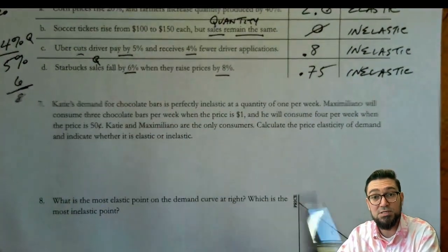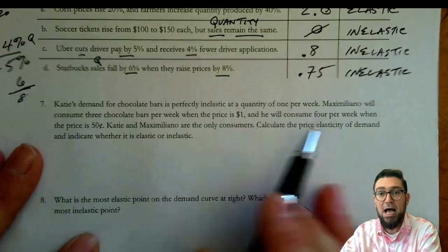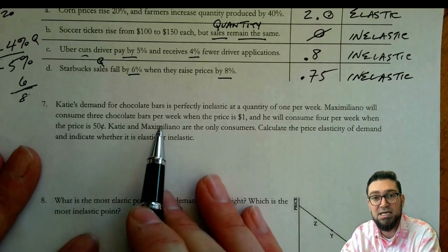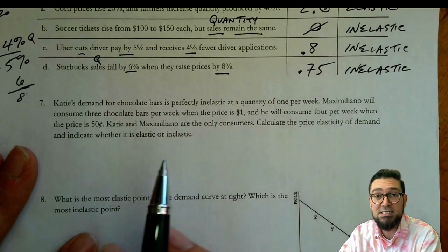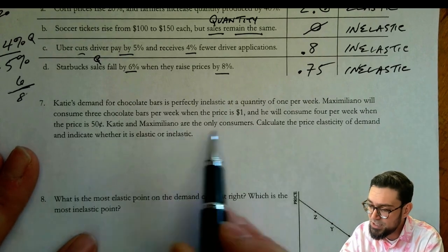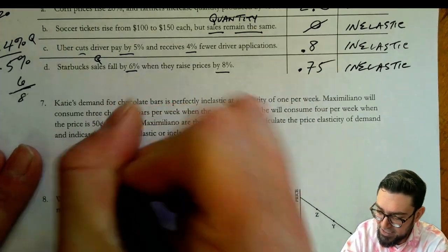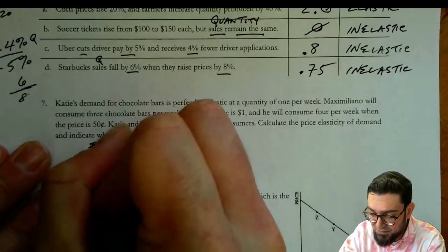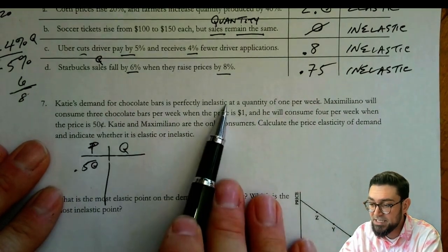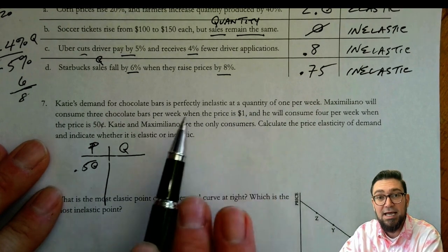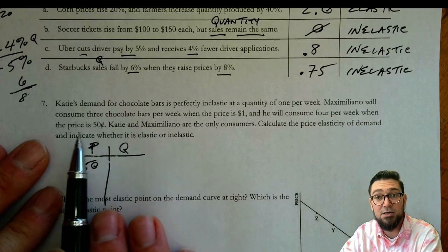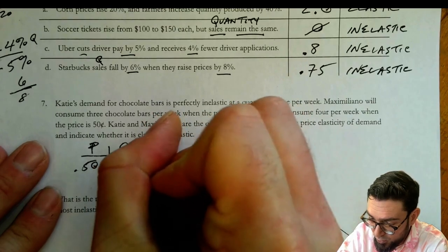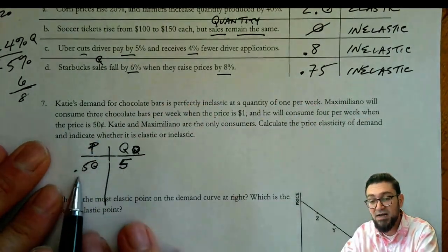Number seven: Katie's demand for chocolate bars is perfectly inelastic at a quantity of one per week. Maximiliano will consume three chocolate bars per week when the price is $1.00, and four when it's $0.50. Katie and Maximiliano are the only consumers — calculate the price elasticity of demand and indicate whether it's inelastic or elastic. So we've got price and quantity. If the price is $0.50, Katie is going to buy one regardless, and Maximiliano is going to buy four. So four plus one is five — quantity demanded is five at $0.50.